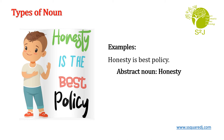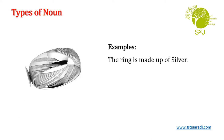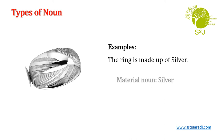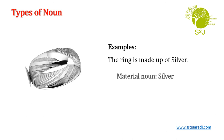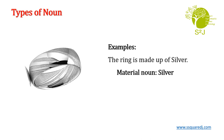Let us see one more example. The ring is made up of silver. Here, silver is a material used to make the ring, so silver is a material noun. Silver is an element, so silver is a material noun.